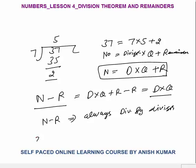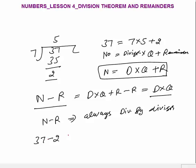Here you can see: 37 was the number, minus 2 the remainder, that is 35. This is divisible by 7.